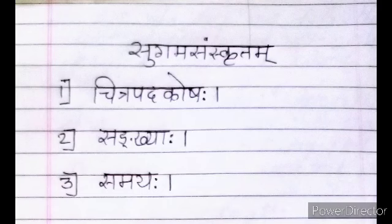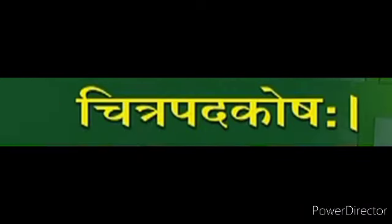Here we see three sections included in Sugam Sanskritam: Chitrapadakoshah, Second - Sankhyaha, Third - Samayah. Let us start with the first section, Chitrapadakoshah.